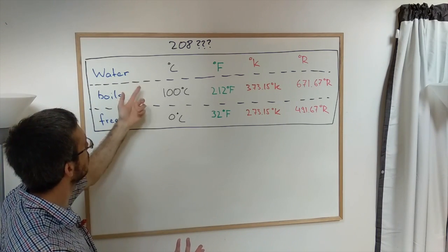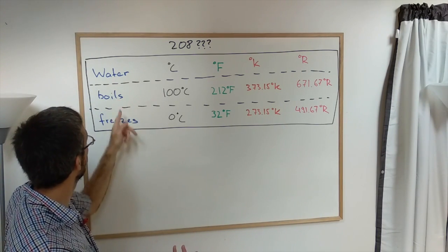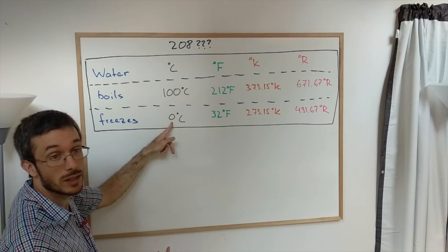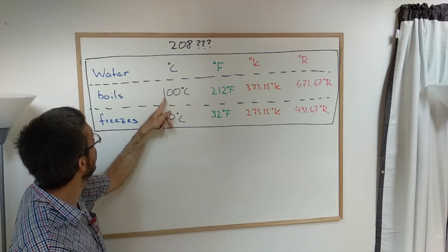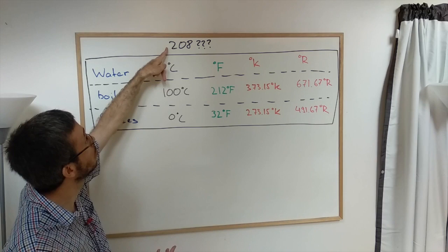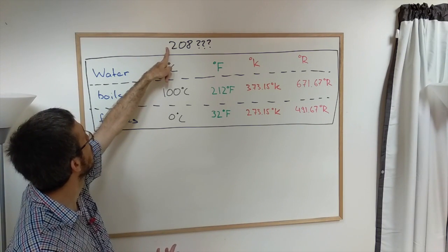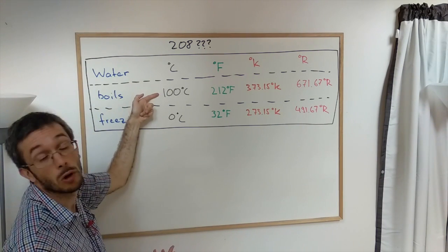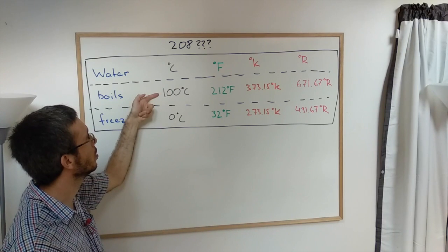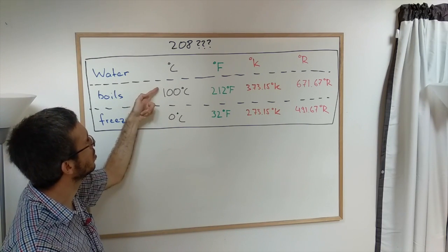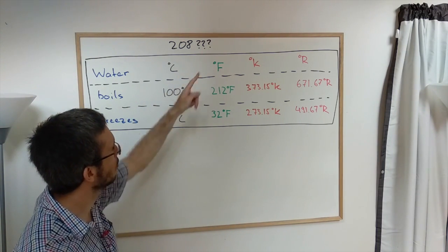In Celsius, let's define the boiling and freezing point. 0 degrees Celsius is freezing and 100 degrees Celsius is boiling. So could 208 be Celsius? No, the water was definitely liquid in the water heater. Celsius is out.